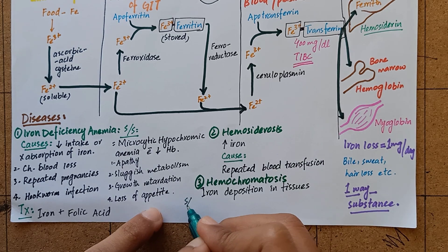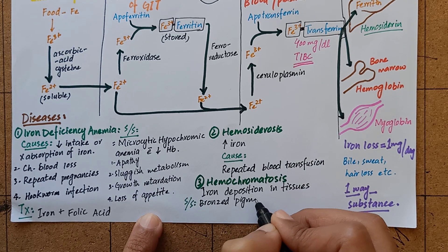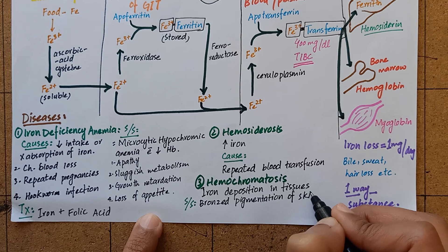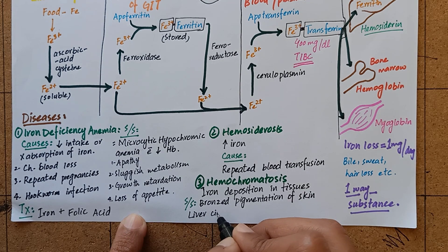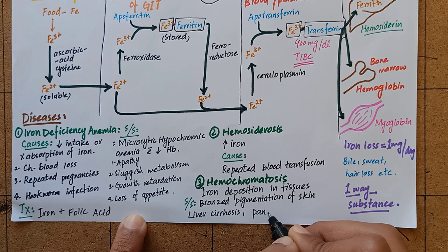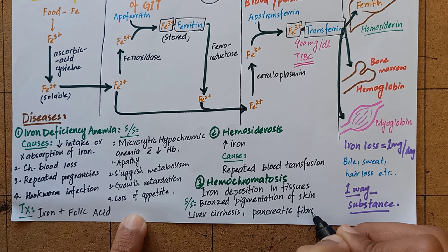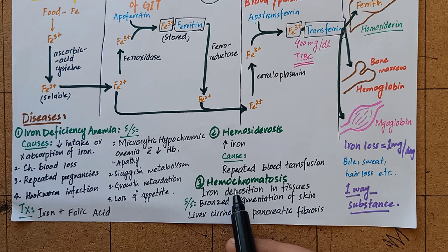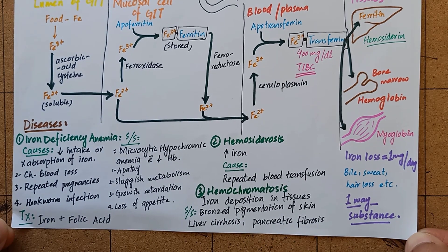Manifestations of this disorder are bronzed pigmentation of skin, cirrhosis of liver, and fibrosis of pancreas. Hemosiderosis is sometimes accompanied by hemochromatosis.